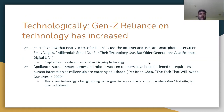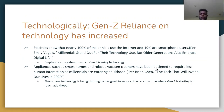Technologically, one reason why Gen Z technology use has increased is that teenagers have become more reliant on it. Statistics show that nearly 100% of millennials use the internet, and 19% are smartphone users, which emphasizes the extent to which Gen Z is using technology. Applying to things such as smart homes, robotic bathroom cleaners, and robotic refrigerators — designs that require less human interaction — this shows technology being designed to support laziness as Gen Z is reaching adulthood.